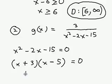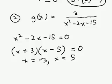If you set both factors equal to 0 and solve, you'll get x equals negative 3, x equals 5. So these are exactly the values that x cannot be. So we restrict them from our domain.